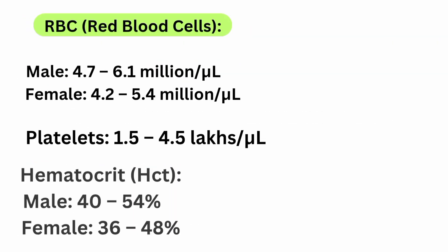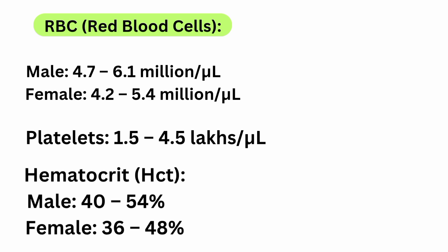Red blood cells (RBC): male normal range is 4.7 to 6.1 million per microliter; female is 4.2 to 5.4 million per microliter. Platelets: 1.5 to 4.5 lakh per microliter. Hematocrit (HCT): male is 40 to 54%, female is 36 to 48%.